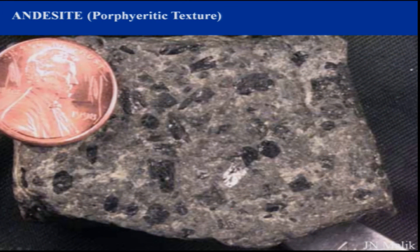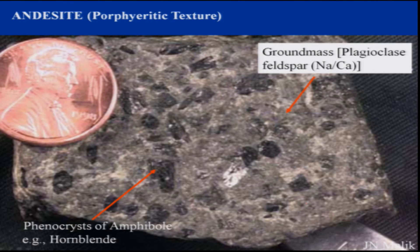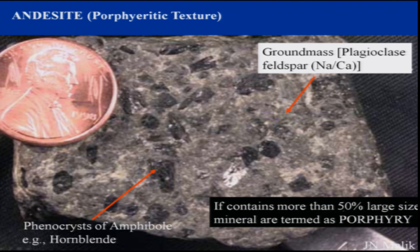Looking at andesite, it mostly shows porphyritic texture — we see the larger phenocrysts and the smaller ground mass. The larger crystals are mostly hornblende, and the ground mass is mostly sodium and calcium calcic feldspars. If a rock contains more than 50 percent larger minerals they are termed as porphyries — this is the term given to rocks based on texture when they contain 50 percent or more larger crystals, as in an andesite porphyritic texture.